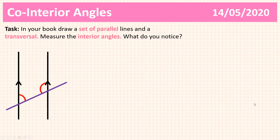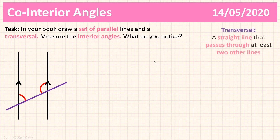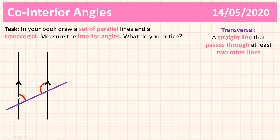Okay, so hopefully that makes sense, and we're going to move on to something more interesting. What I'd like you to do is draw a set of parallel lines and a transversal, then measure all the interior angles and tell me what you notice. A transversal is a straight line that passes through at least two other lines — on our diagram the purple line is our transversal. So pause the video, draw a set of parallel lines and a transversal, and measure the angles. I've drawn in some angles for you to measure. Off you go.